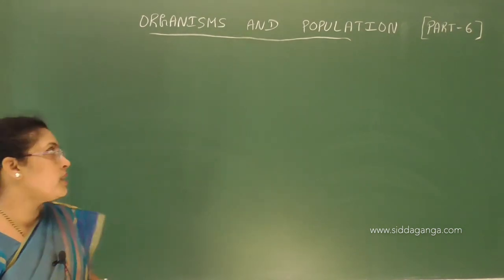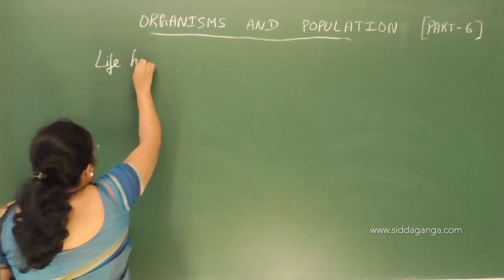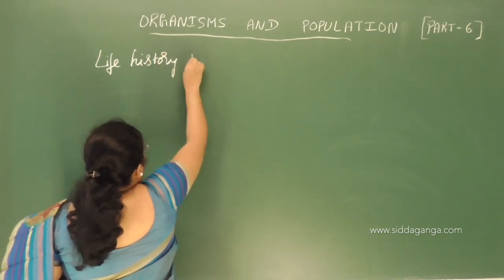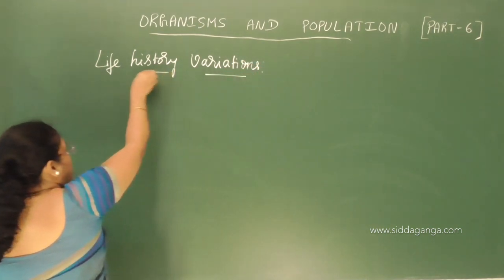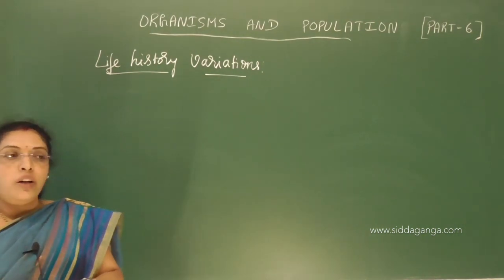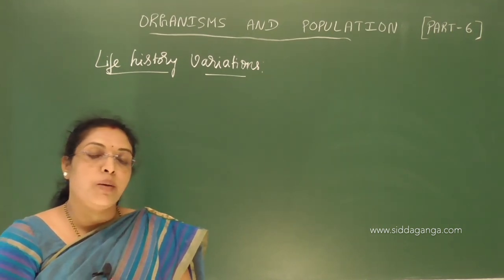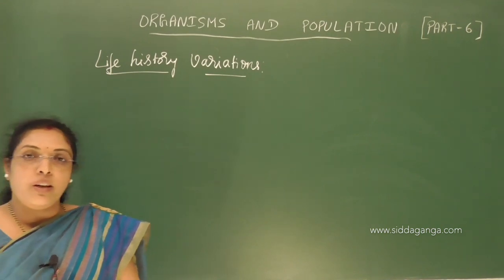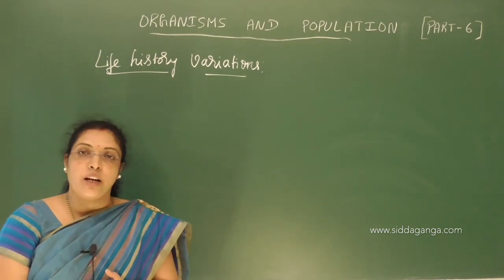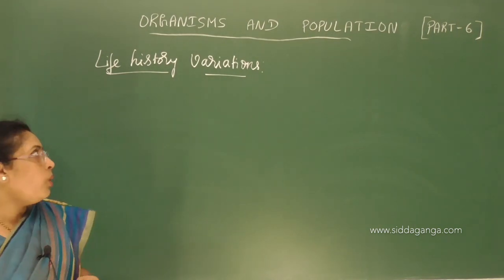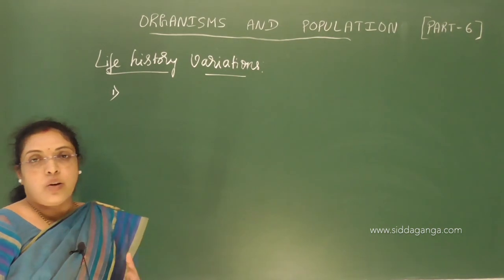Before going to that, we'll discuss life history variation. So according to Darwin, when the survival of species and fitness of species in a particular habitat is based upon strength and struggle for existence, so that we denote as R — intrinsic rate of natural increase.